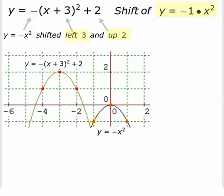Now we shift that upside down parabola 3 to the left and up 2. The vertex goes 3 to the left and up 2 to the new location of negative 3, 2. Then we have the two other points: we go 1 unit to the right, down 1; 1 unit to the left, down 1, to replicate the shape of y equal negative x squared. And there is our graph.